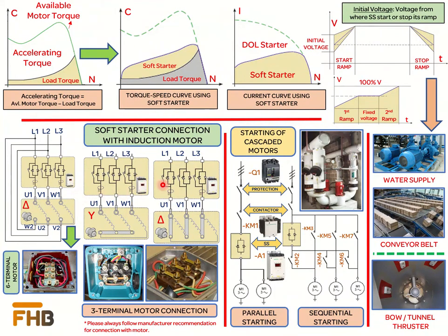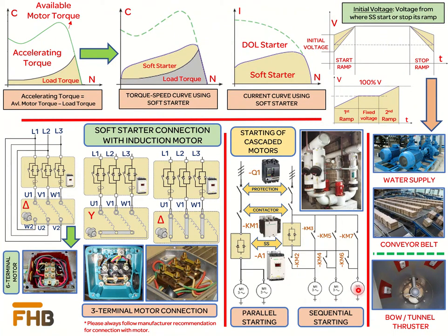Another important area for discussion is the starting of several motors using a single soft starter. These schemes can be divided into two parts. First is the start of parallel connected motors with a single soft starter, as shown in the diagram. Care should be taken that the selected soft starter rating is sufficient to cater to the load and starting current of all the connected motors. The second scheme is the sequential start of motors, called cascaded motor starting, where the soft starter starts the connected motors one by one. Care should be taken that the soft starter rating is sufficient for each connected motor.